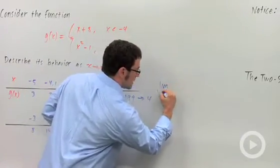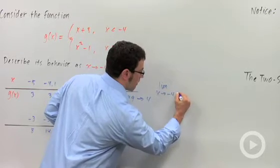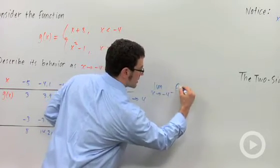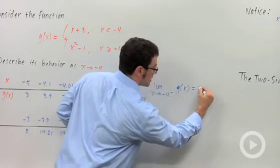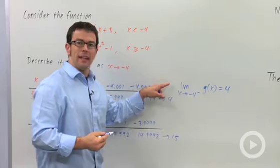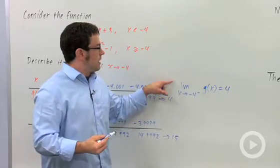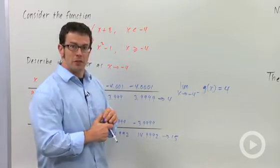We say the limit as x approaches negative 4 from the left of g of x—this is g—is 4. This is the left-hand limit. The left-hand limit is one of the one-sided limits for g of x at 4.